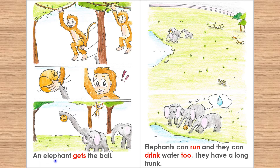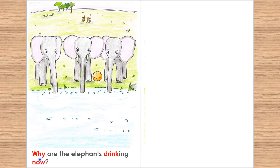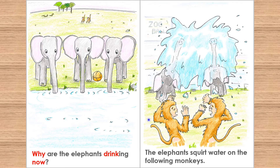An elephant gets the ball. Elephants can run and they can drink water too. They have a long trunk. Why are the elephants drinking now? The elephants squirt water on the following monkeys.